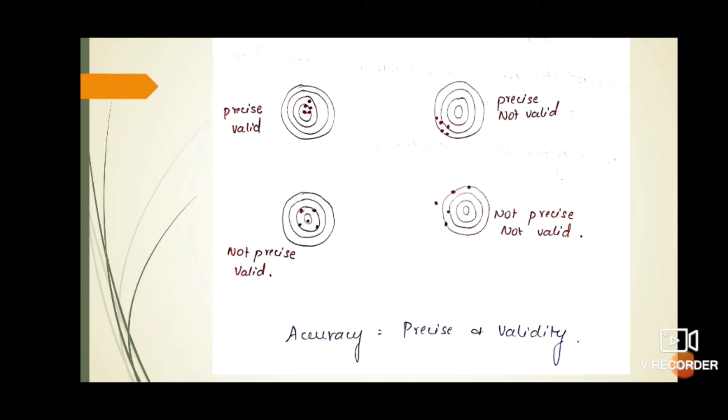Whenever we talk about accuracy, we have to know about the terms precision and validity. Precision denotes how far the measurements are related to each other, it has no relation with the true value. Accuracy tells how far the measured results are near to the true value.